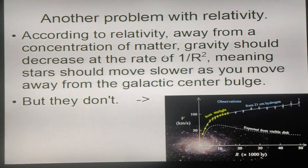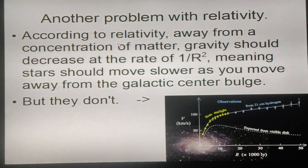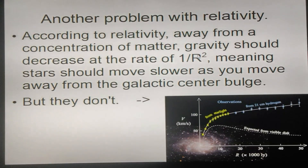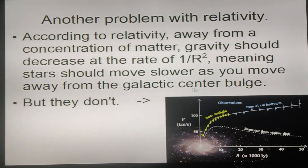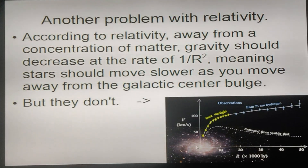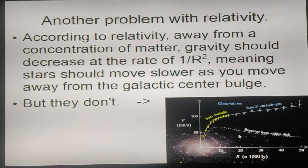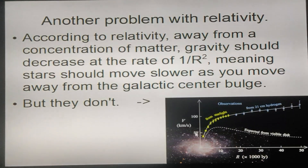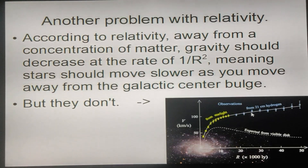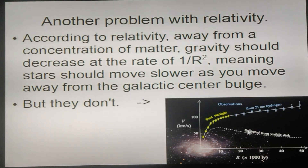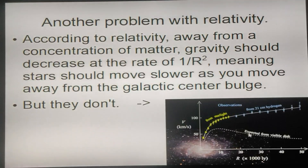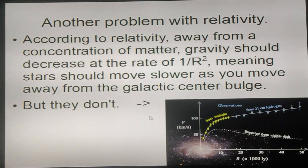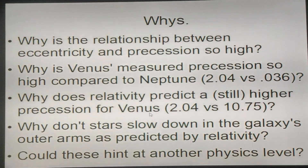According to relativity and Newtonian mechanics, away from a concentration of matter and mass, gravity should decrease at the rate of one over r-squared, meaning stars should move slower as you move away from the galactic center bulge. But they don't. They should go up and then get slower and slower, but in reality they go up and keep going up. The measured speed is different from the predicted, calculated speed — and that raises quite a few questions.